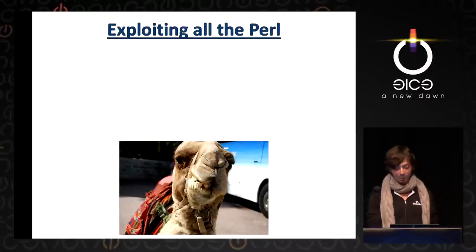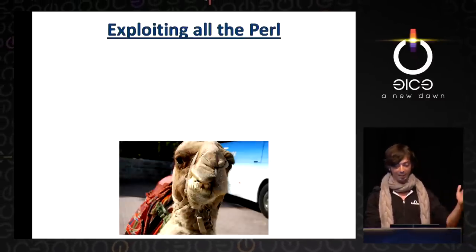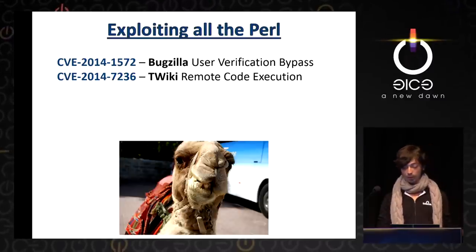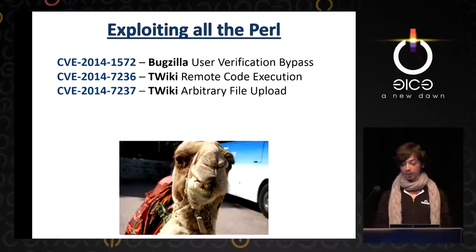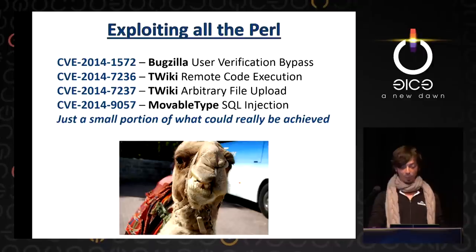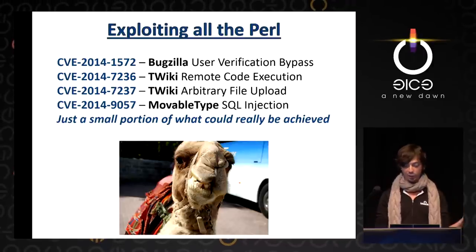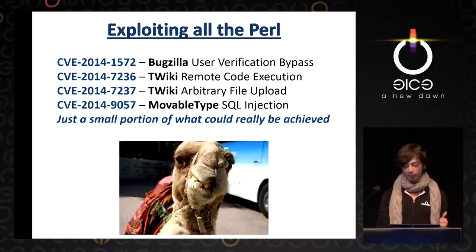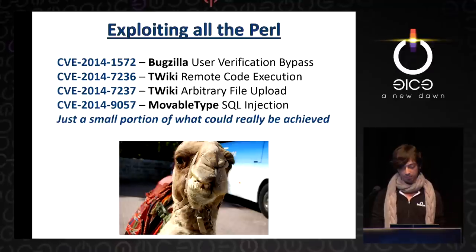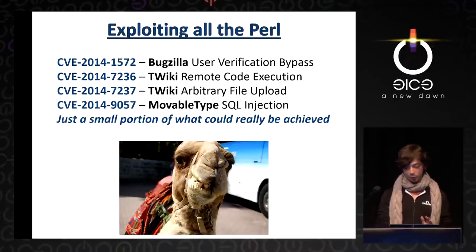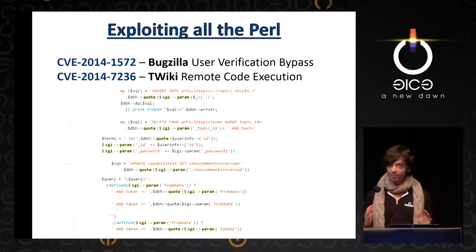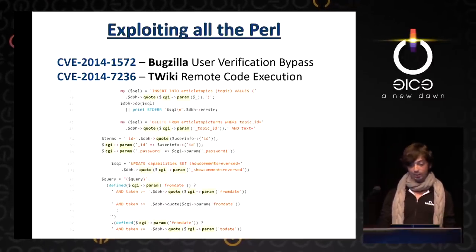So what could be achieved with all this? We could bypass the authentication of Bugzilla, execute code and upload any file to Twiki, inject SQL into Movable Type — and that's just a small portion of what could really be achieved. By the way, IMDB is written in Perl. Just search CGI and quote on GitHub and consider what you can do with it.